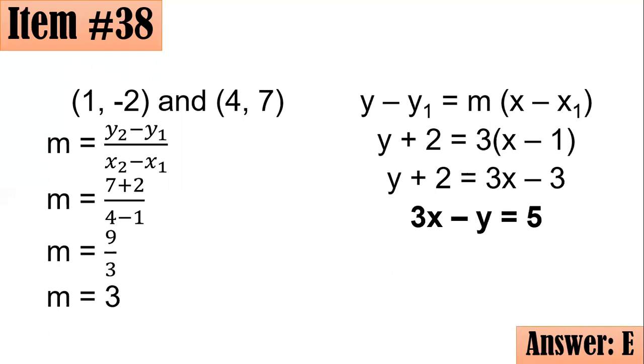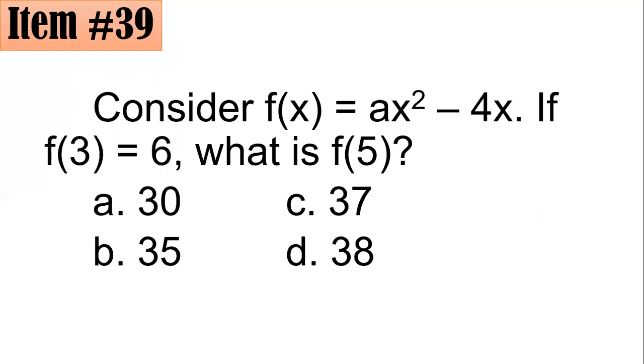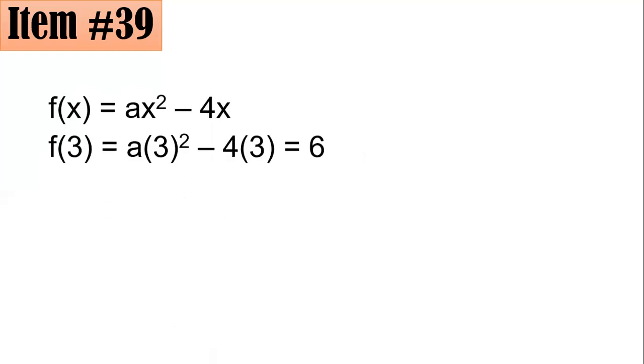Item 39. Consider f of x equals ax squared minus 4x. If f of 3 is 6, what is f of 5? Is it 30, 35, 37, or 38? We could see here that A is missing. So I believe we have to solve for A first. Using the fact that f of 3 is equal to 6, we will substitute 3 with 6. Substitute x, rather, with 3. So f of 3 is equal to A times 3 squared minus 4 times 3. And since the value according to the given is 6, that's why it's equal to 6. Then you will have this one: 3 squared is 9. So A times 9 is 9A minus 4 times 3 or 12 equals 6.